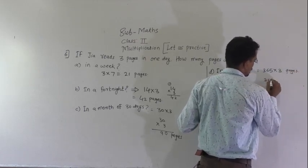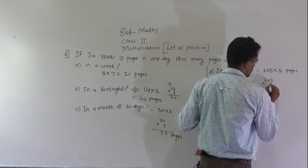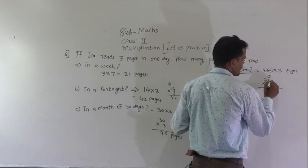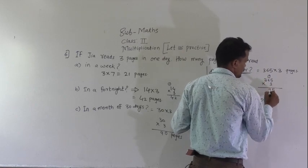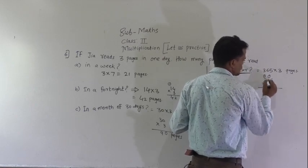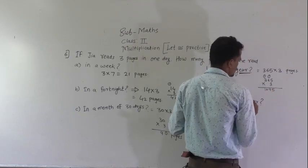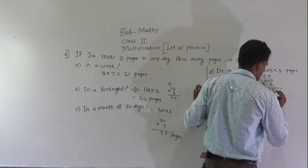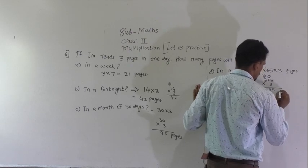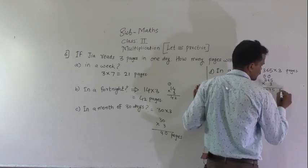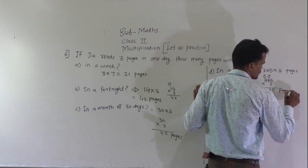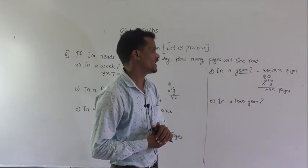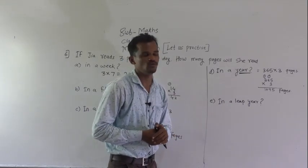Solve this 365 multiply by 3. 3 fives are 15, 1 carry. 3 sixes are 18 plus 1, 19, 1 carry. 3 threes are 9 plus 1, 10. So in a year she will read 1095 pages.